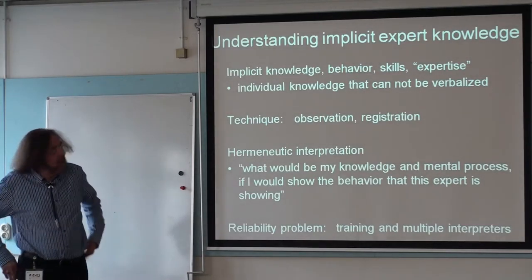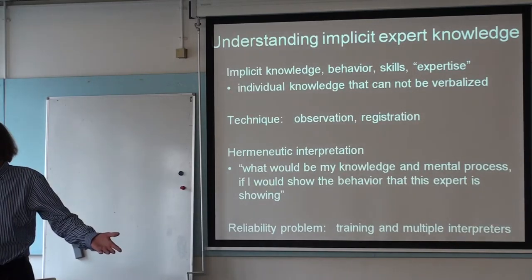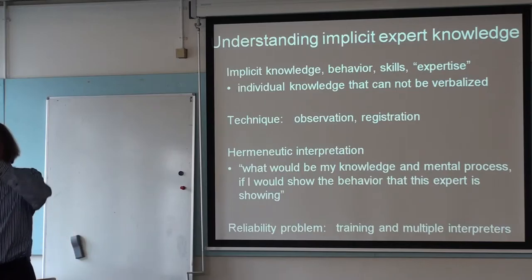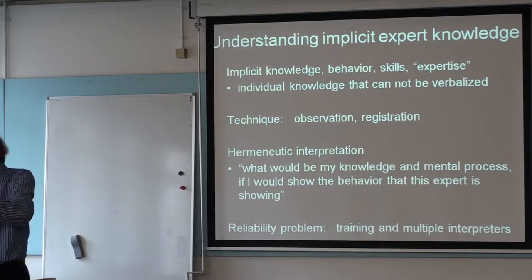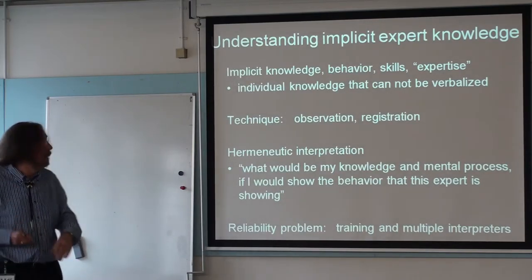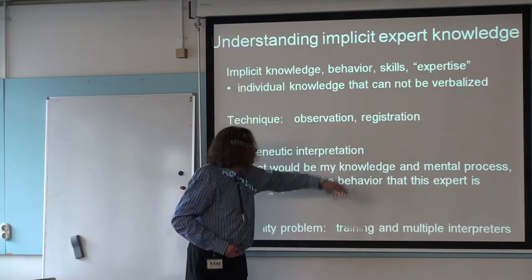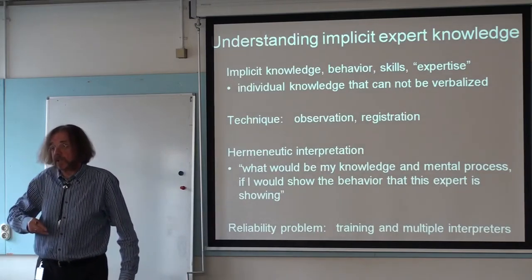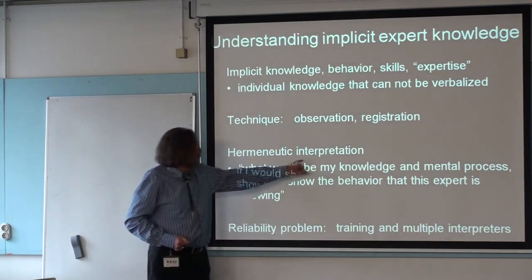Implicit expert knowledge is knowledge that experts are obviously using but cannot verbalize. A medical expert can look at a complex scan and diagnose: 'I can see there's a tumor here and it's spread to this region.' If you ask how they can do it, they say 'I see it.' It cannot be verbalized. So what can you do? You can observe, put it on video, and then try to interpret — we call this hermeneutic interpretation, which is based not on psychology but on philosophy.